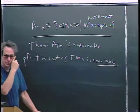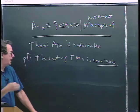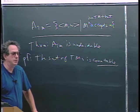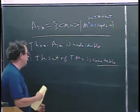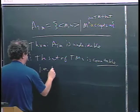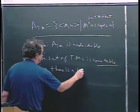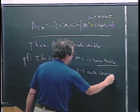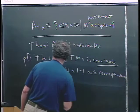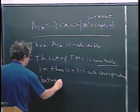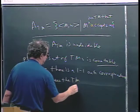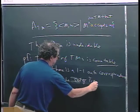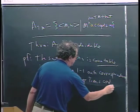Last time we talked about what countable means. Countable means that the set of objects — in this case the set of Turing machines — can be put in one-to-one correspondence with the natural numbers. That is, there is a one-to-one and onto correspondence between the elements of the set of Turing machines and the natural numbers N.